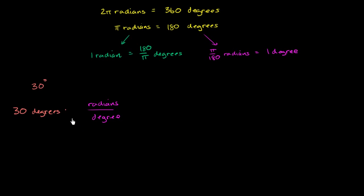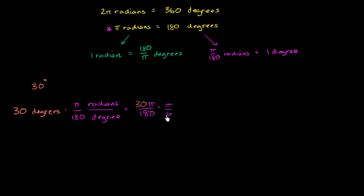We just have to think: if I have π radians, how many degrees is that? That's 180 degrees — π radians for every 180 degrees, or π over 180 radians per degree. So we get 30 times π over 180, which simplifies — 30 over 180 is 1 over 6 — so this is equal to π over 6 radians.